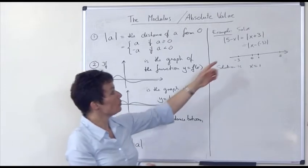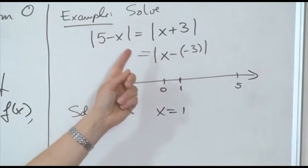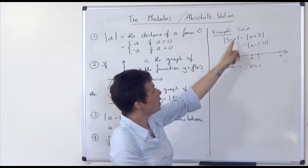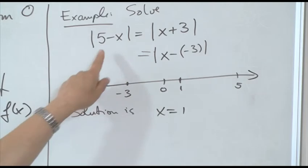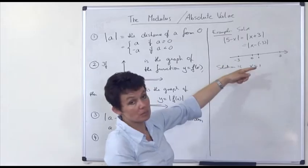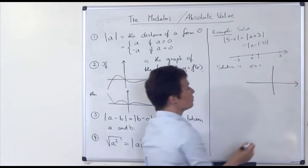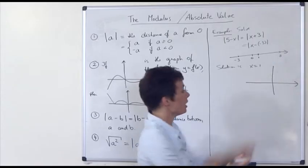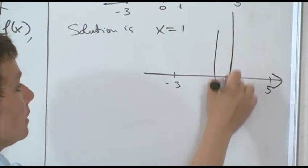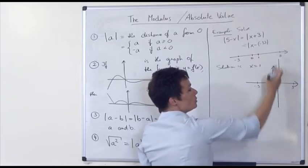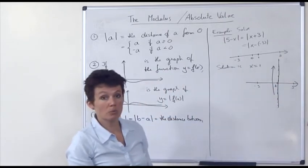By the way, for those of you who are familiar with complex numbers, this applies equally to solving this equation in the complex numbers. So if you think of x being replaced by a z, and the problem is saying find all z's for which this equality holds, it says the same thing. If you are looking for all complex numbers whose distance from negative 3 is the same as its distance from 5, what we would get is just a vertical line. If you think of this as the complex plane, the solution would be all numbers on this vertical line going through the point x equals 1.